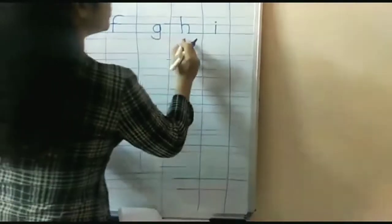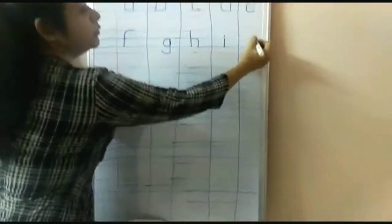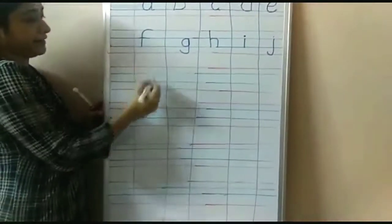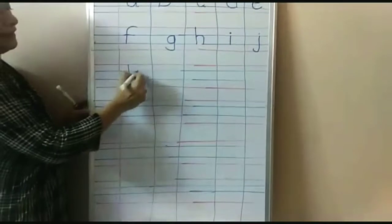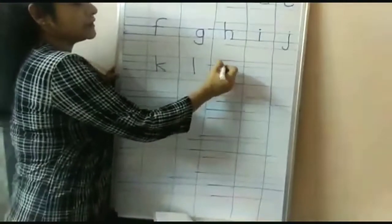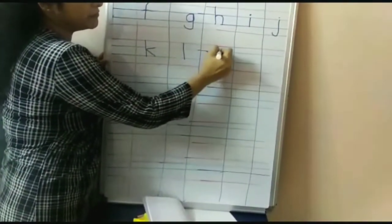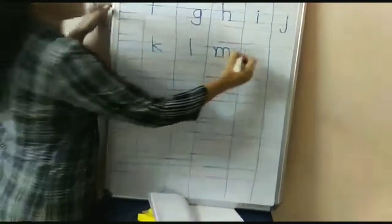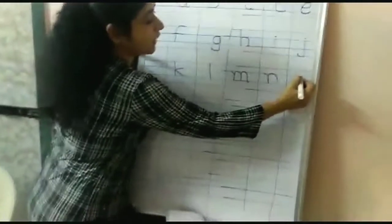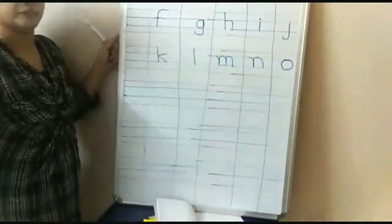Now we'll write K. Red line to blue line. Make a standing line, and blue line to blue line, slanting line. Now we'll write O. Blue line to blue line.